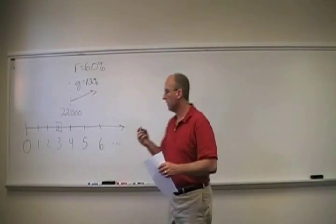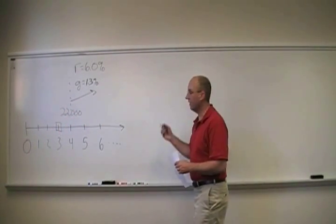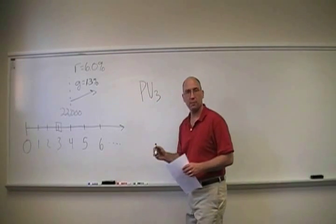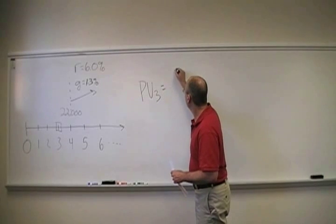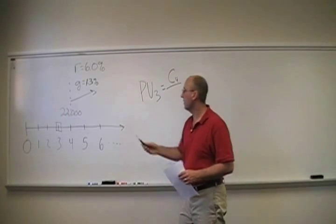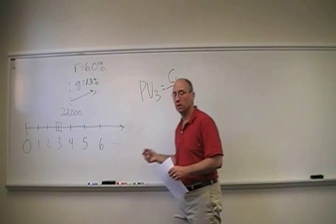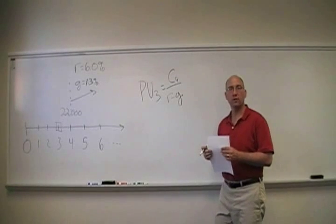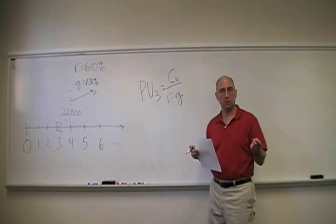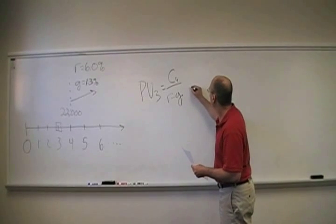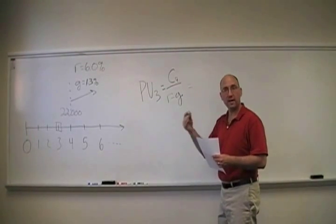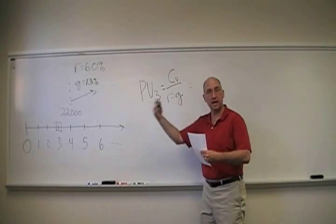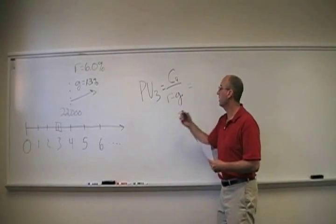So remember, a growing perpetuity, in order to figure out the value as of time 3, it would simply be the cash flow that we expect at time 4, all over the difference between the cost of capital and the growth rate. Well, in this case, we're expecting that cash flow one year after we're trying to get the value, which is four years from today, to be $22,000.